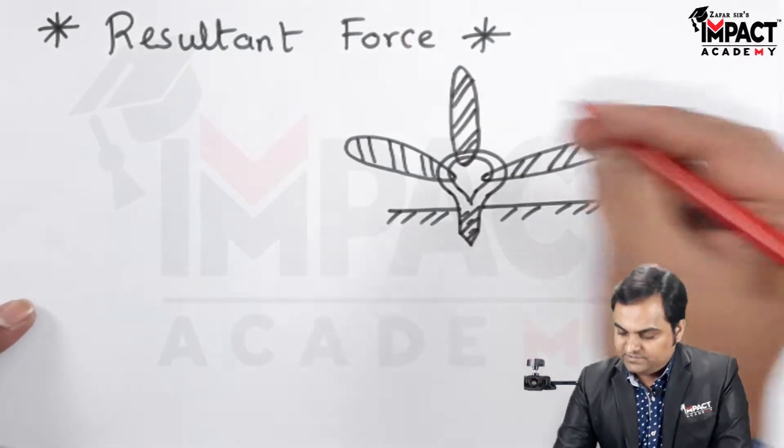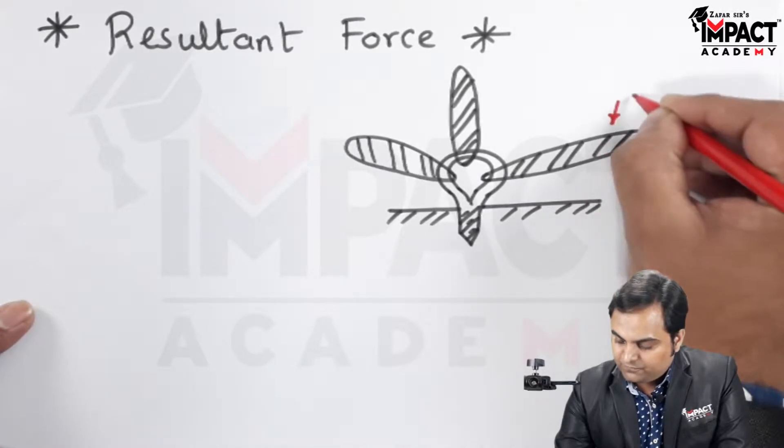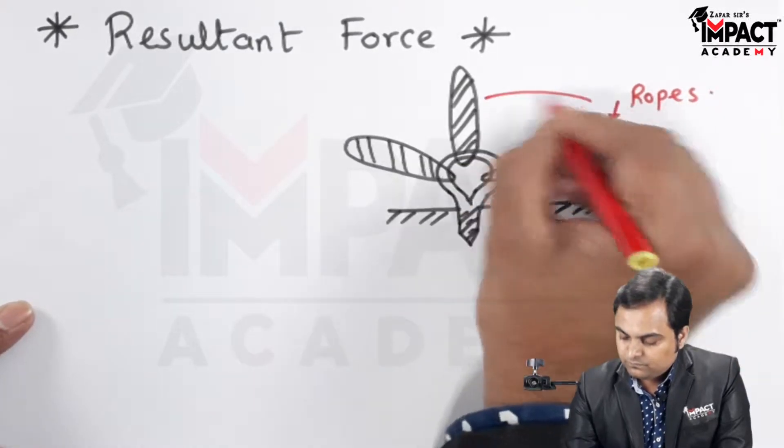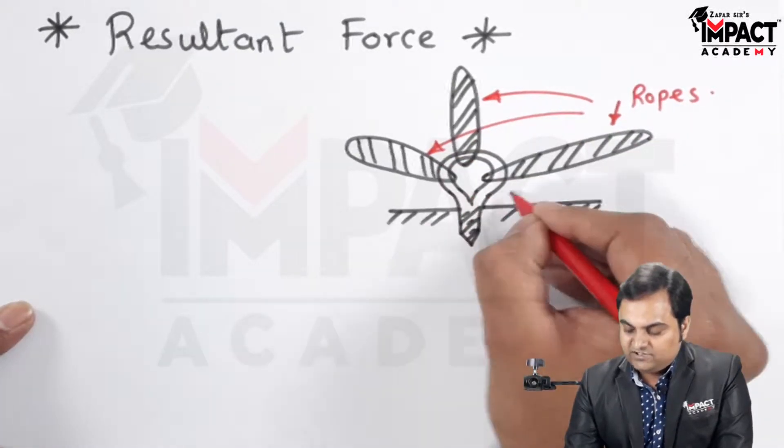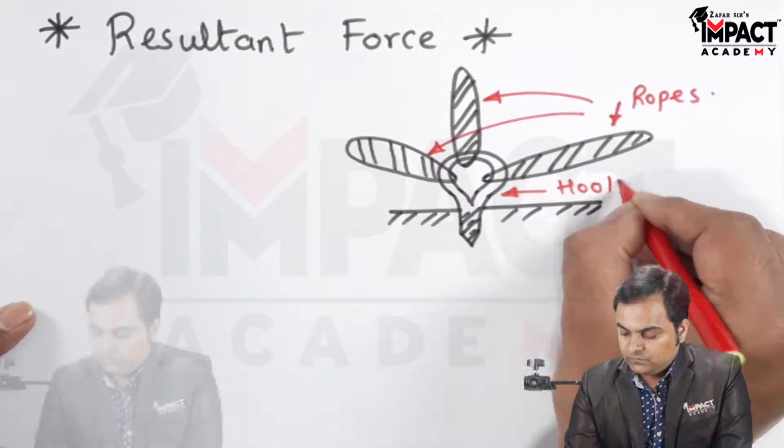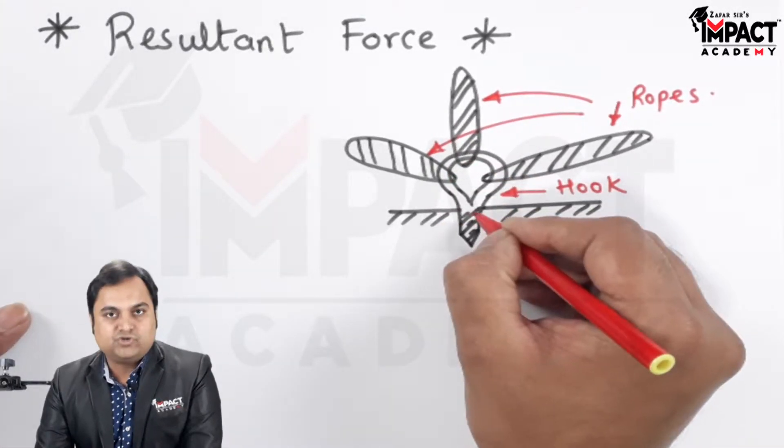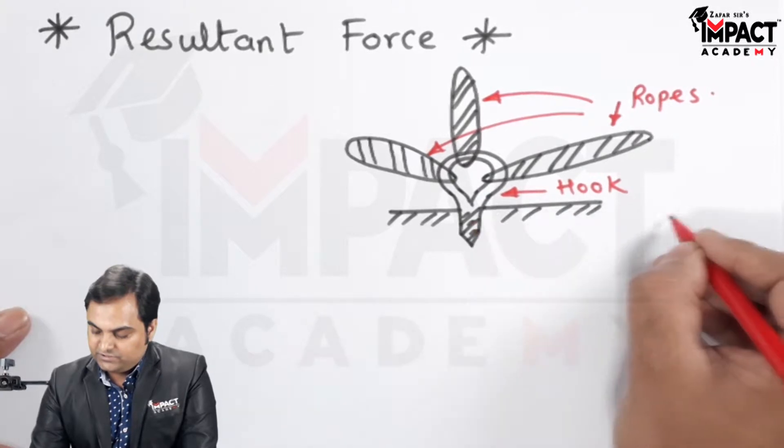So, here I have taken a simple example, in which these are the ropes which are attached to a hook, or an eye end which is shown over here. It is fixed to this surface.